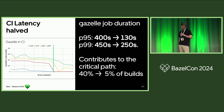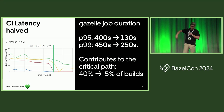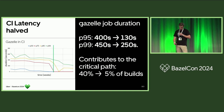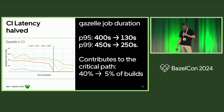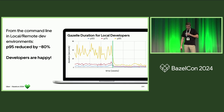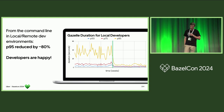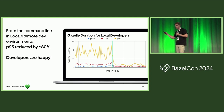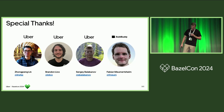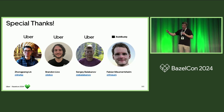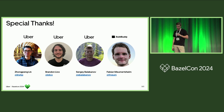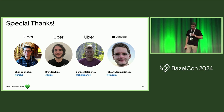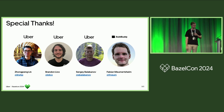Some quick results: we were able to halve our CI latency from around 10 minutes to around 200 seconds, and we were able to remove Gazelle from the critical path almost all the time. For local command line, we were able to reduce our P95 by 80%, so developers are happy. Special thanks to my team at Uber and to Fabian, who is at BuildBuddy and an open source maintainer of Gazelle. Thank you all for listening.